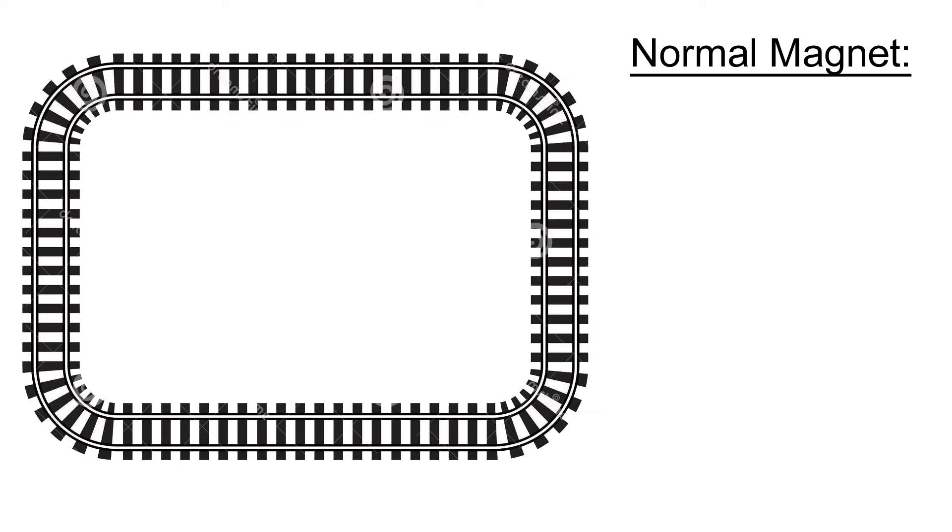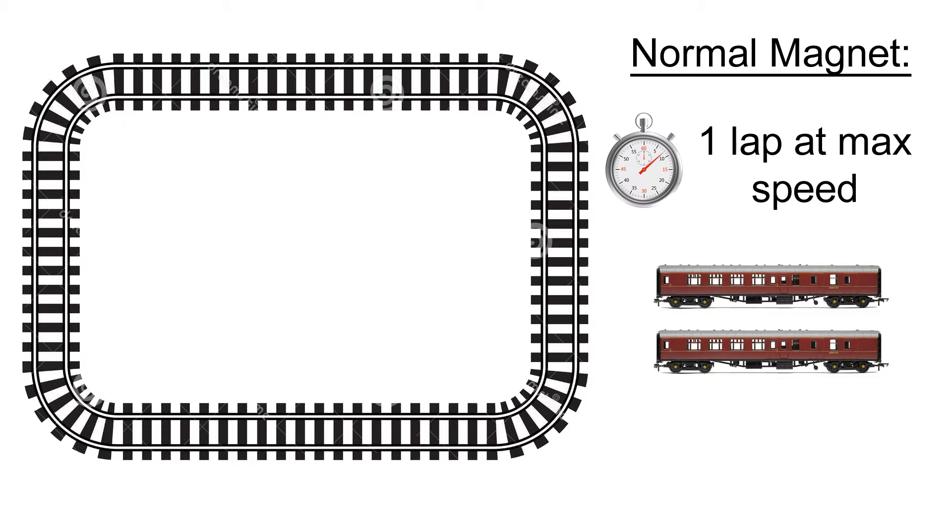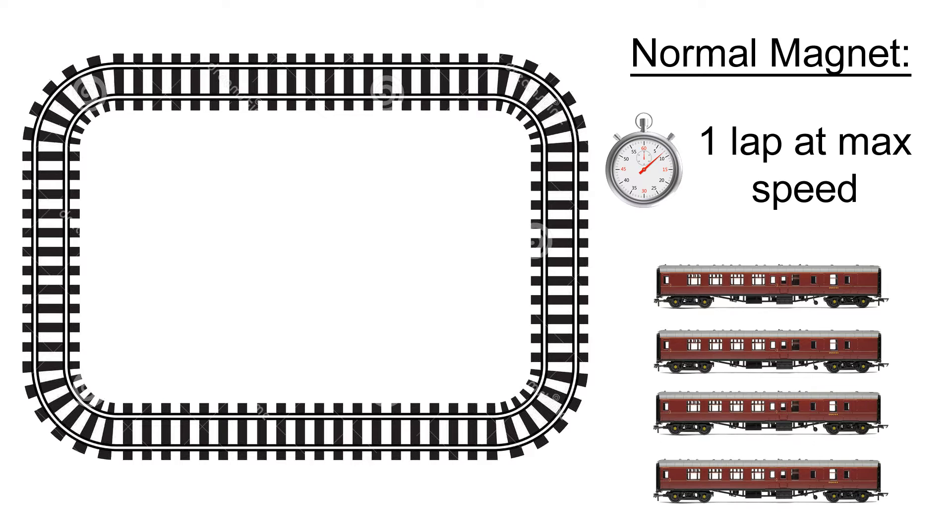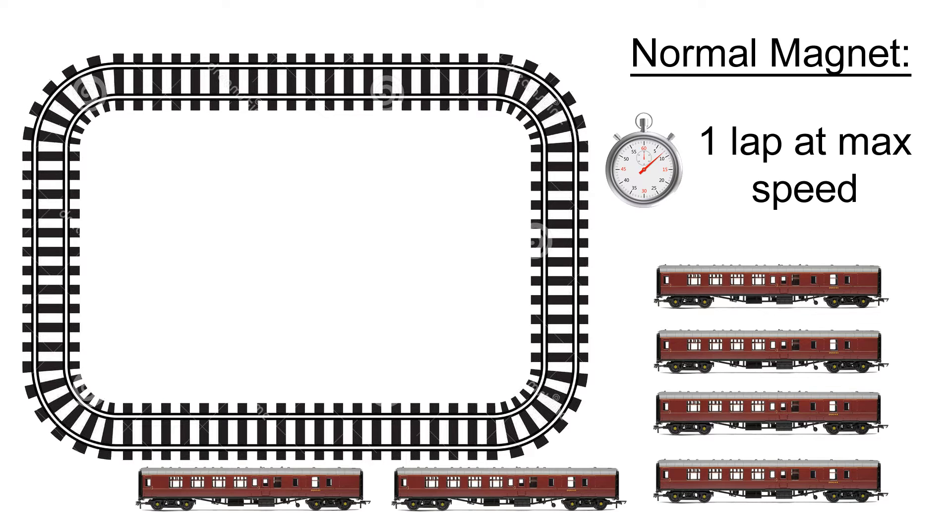Okay, so the first experiment for high speed and power. With the normal magnet, non-modified, I will precisely time the duration of one lap of the railway at full speed. So, that's full 12 volts on the controller. And I'm going to do that with cameras so I can, to the nearest millisecond, get it bang on. And then I'll repeat that experiment six times, each time adding an extra coach. So, in theory, we should be pulling more juice from the transformer.